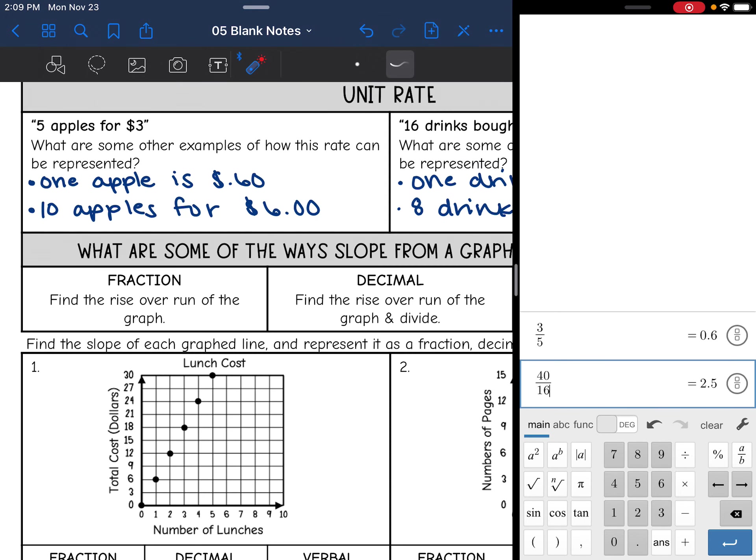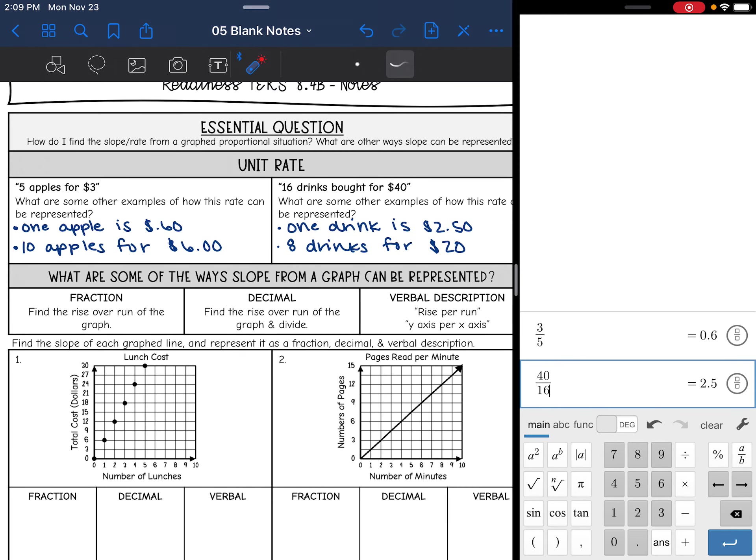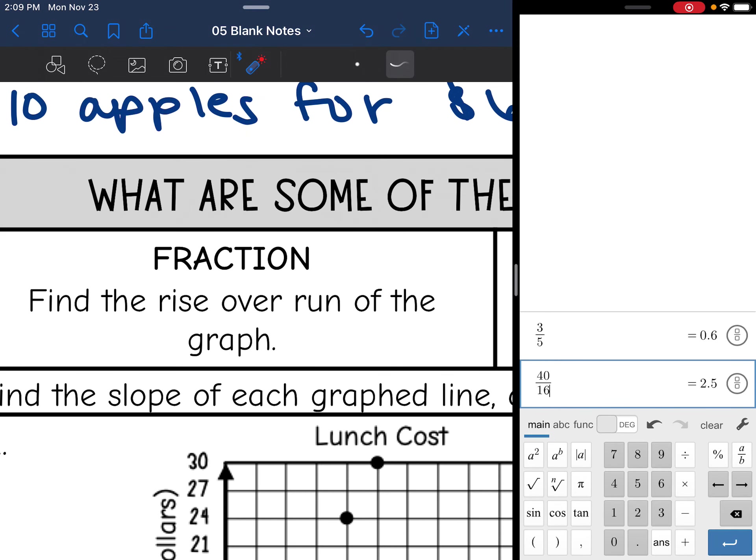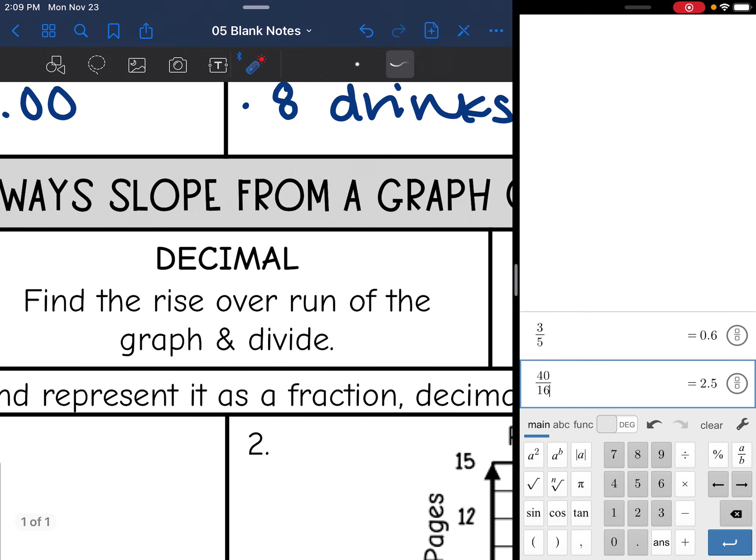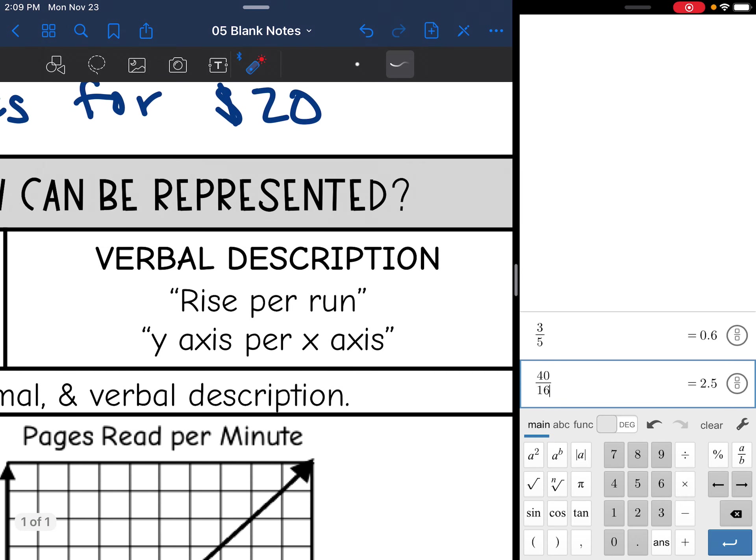Not only can they change the rate, but sometimes they will change the way that slope is represented. Yesterday we looked at a fraction doing the rise over the run. That's one way that you can represent slope. We can also represent slope as a decimal. To do that, you will find the rise over the run of the graph and just divide it. And then a verbal description, it's kind of like what we did above. It is whatever is represented on the y-axis per the x-axis or rise per run.